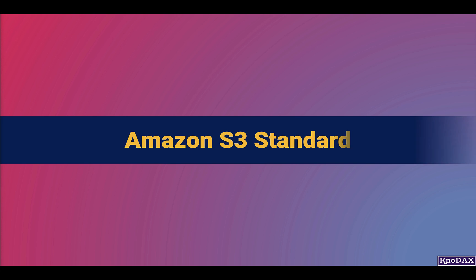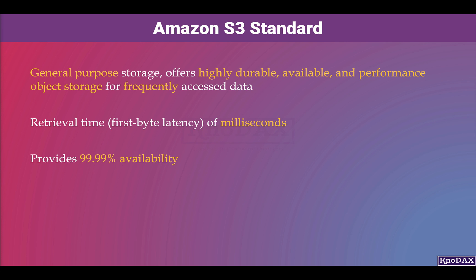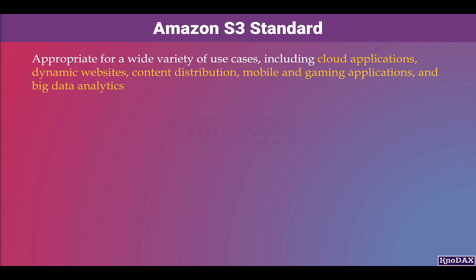Amazon S3 Standard is a general-purpose storage that offers highly durable, available, and performant object storage for frequently accessed data. S3 Standard has a retrieval time of milliseconds to get the first byte and provides 99.99% availability. It is used for frequently accessed data with low latency and high throughput, making it appropriate for a wide variety of use cases.